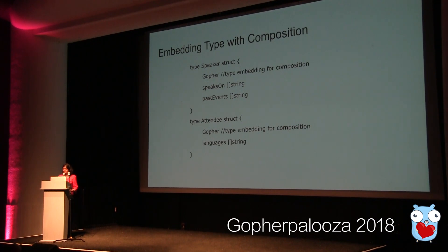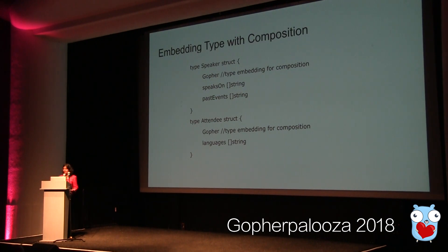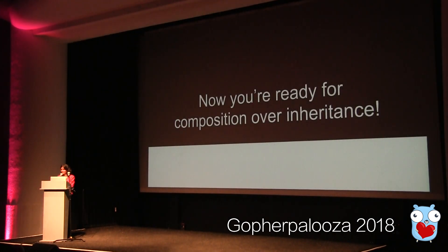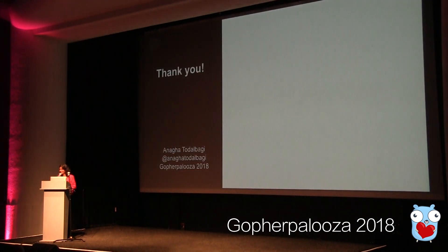In conclusion, we can embed types with composition. Because Go does not support inheritance, composition is preferred, and type embedding is the way to implement composition. Go provides a lightweight type system that enables code reusability and promotes composition over inheritance. So now you're ready to understand this. Thank you.